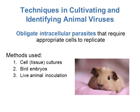Viruses are hard to cultivate and identify in the lab because they are obligate intracellular parasites — they must live inside a host cell to reproduce and grow. To cultivate animal viruses, we must provide an appropriate cell for the virus to replicate. Methods include cell or tissue cultures in petri dishes infected with the virus, injecting the virus into a bird embryo, or live animal inoculation using rodents like guinea pigs or rats.